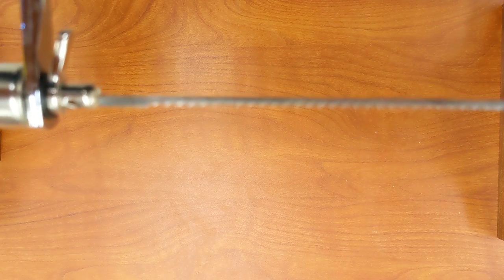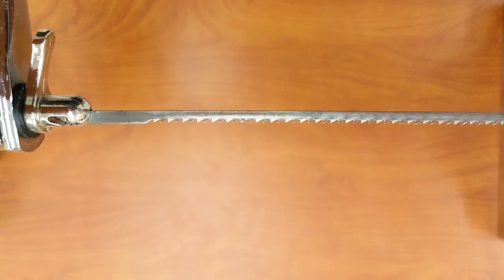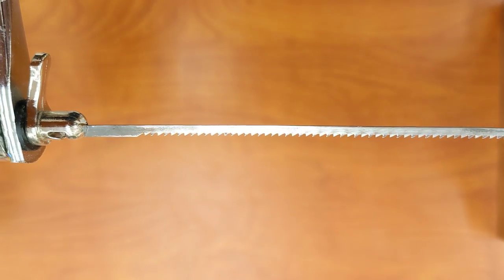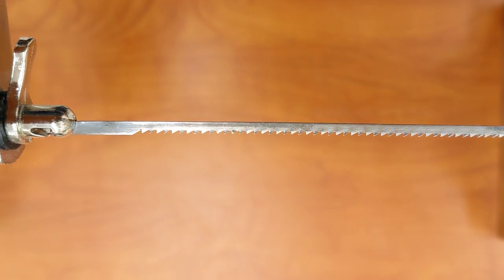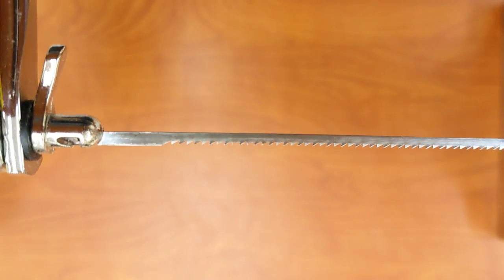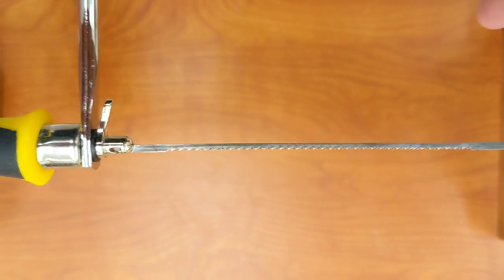Now the teeth on the coping saw normally point toward the handle. You can see the tiny teeth pointing toward the right. So remember that when you reassemble the coping saw.